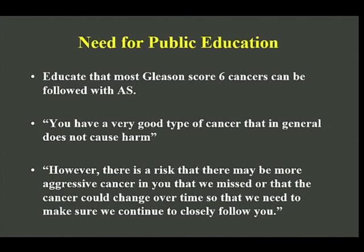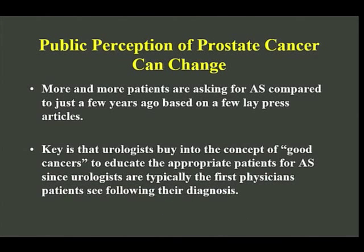The key is a need for public education. Educate patients that Gleason 6 cancers can largely be followed with active surveillance. Tell patients they have a good cancer, but we have to follow it because in some patients we may have missed a more aggressive cancer, or the cancer can change over time. Public perception of cancer can change — more and more patients are opting for active surveillance compared to several years ago. But urologists have to buy into the concept that Gleason 6s are good cancers, and in the appropriate patient, educate them for active surveillance, because urologists are typically the first physicians seeing these patients after diagnosis.